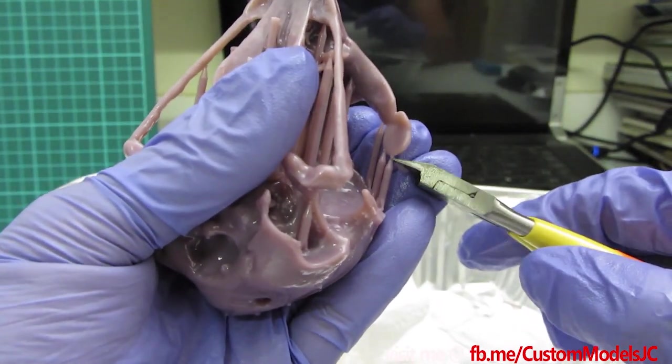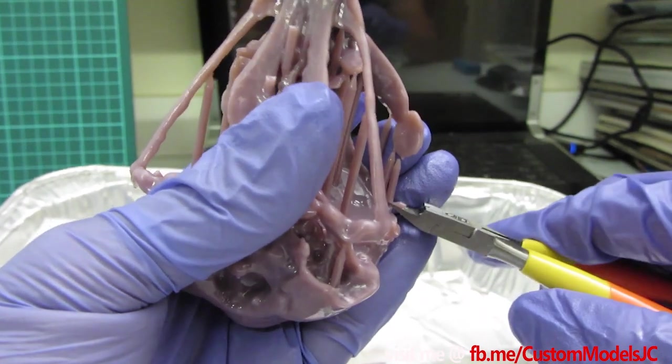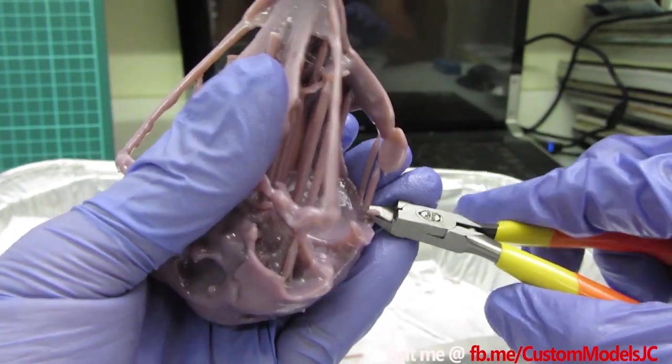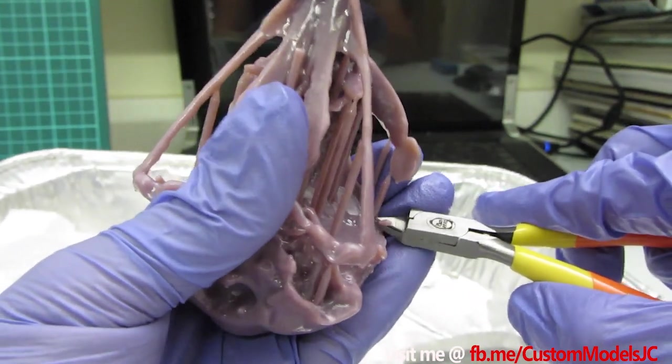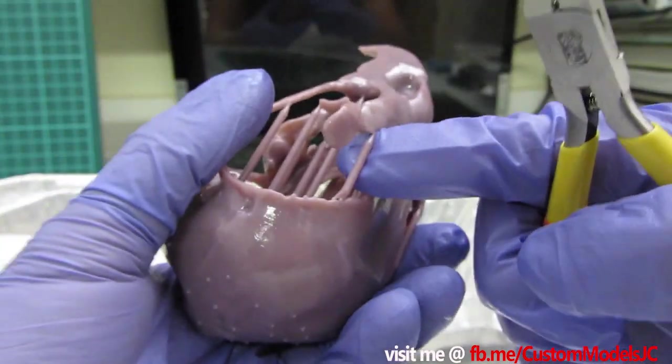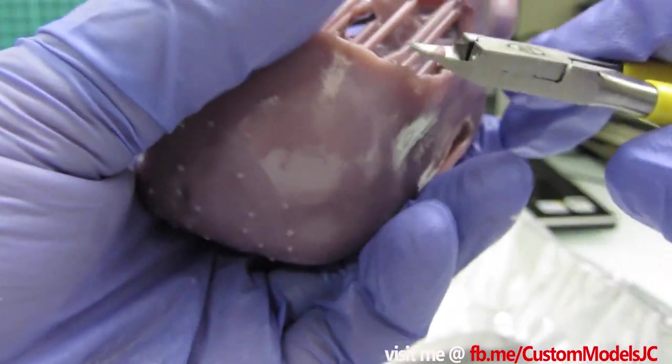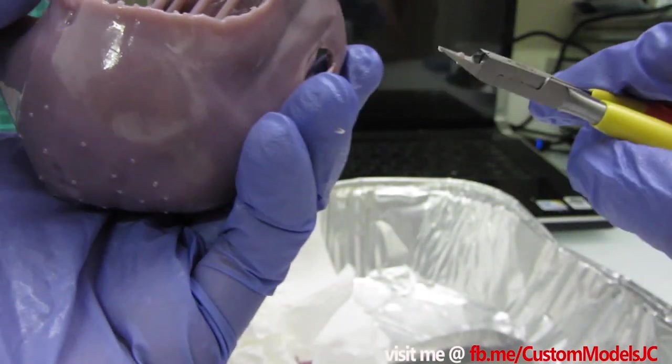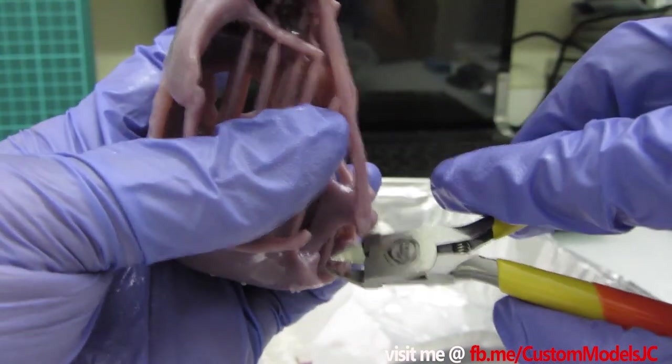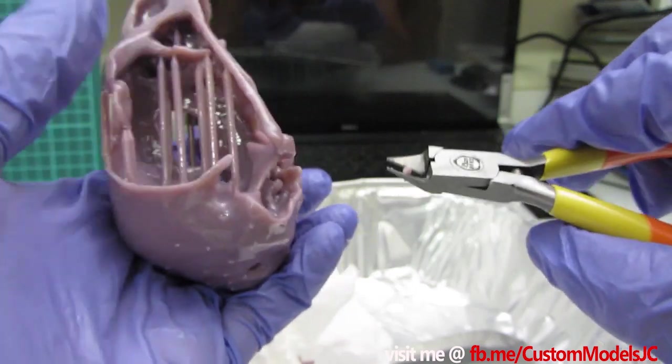None of the supports broke off during printing, which is, you know, you'll often find some of the supports may snap during the print. And if that happens, then yeah, obviously the supports won't be supporting anything and you're gonna have failures.